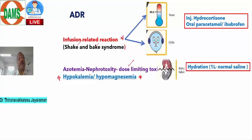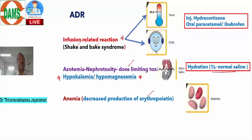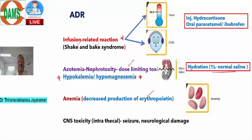Nephrotoxicity can be minimized by maintaining adequate hydration — giving one liter of normal saline prior to conventional amphotericin B injection. Liposomal amphotericin B offers targeted drug delivery with less nephrotoxicity, though it is costly. Other adverse effects include reduction of erythropoietin production causing anemia, and intrathecal administration may cause CNS adverse effects.